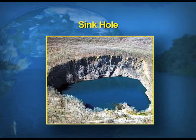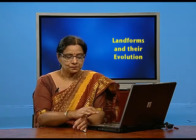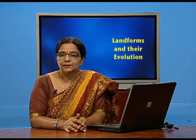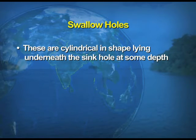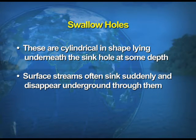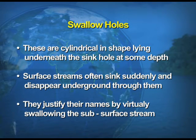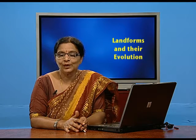Sinkholes are great depressions, and naturally rivers disappear while moving through these areas. Swallow holes are cylindrical in shape, lying underneath the sinkhole at the same depth. Surface streams often sink suddenly and disappear underground through them, and they justify their name by virtually swallowing the subsurface streams — which is how they are known as swallow holes.